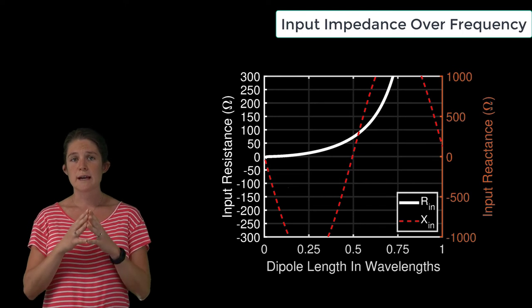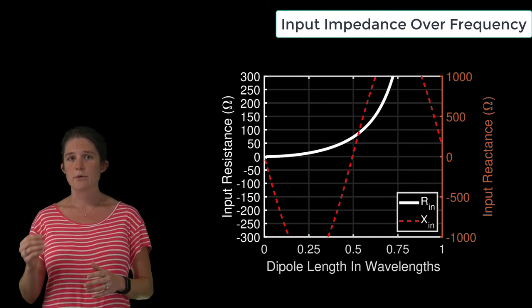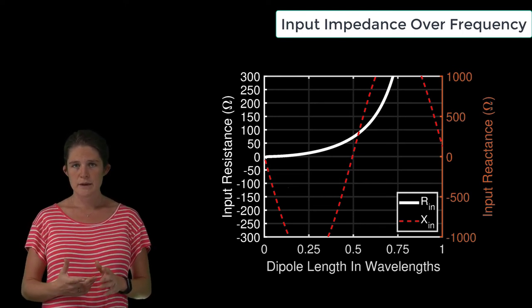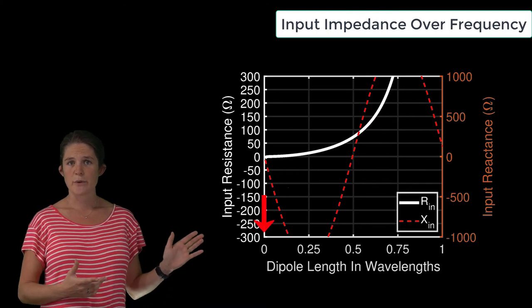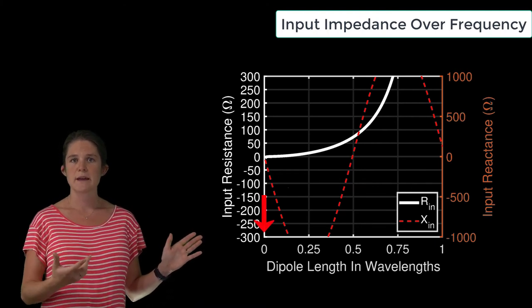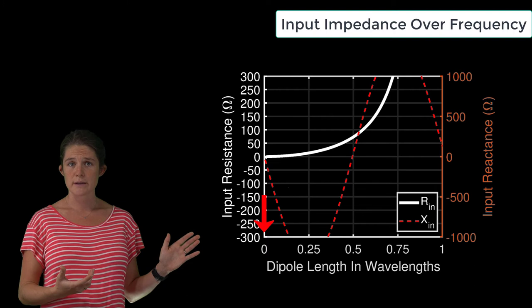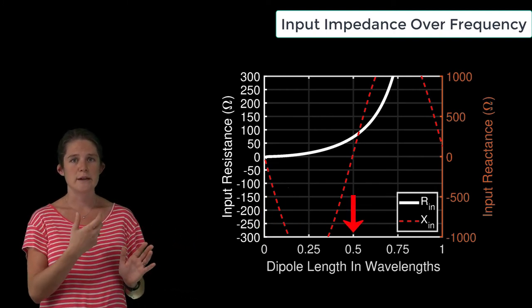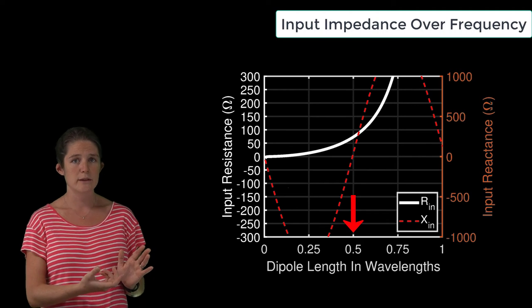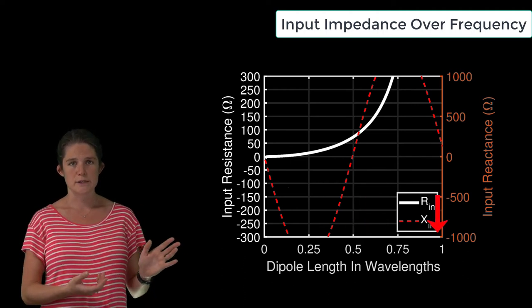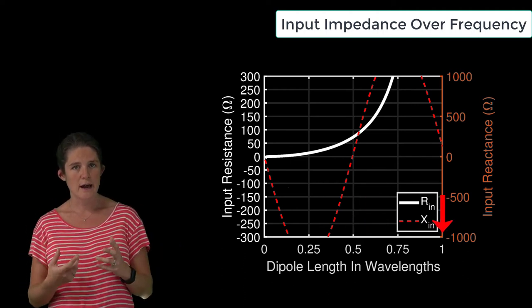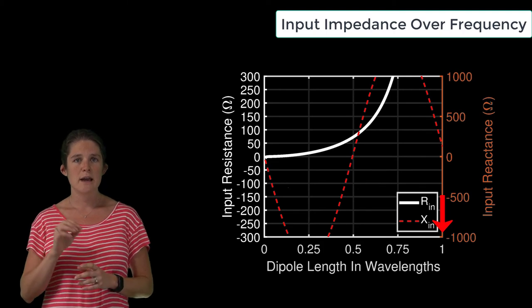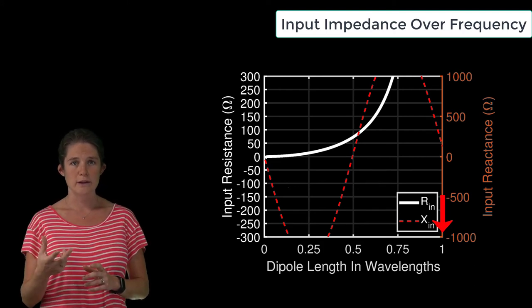However, this x-axis does directly correspond to frequency. It goes from DC, where the wavelength is infinitely long and the length of the antenna is zero wavelengths, up through the half-wave dipole design frequency, where the antenna length is equal to half a wavelength, to twice the design frequency, where the wavelength is half as long as the design frequency, and so the dipole length is the length of a full wavelength.